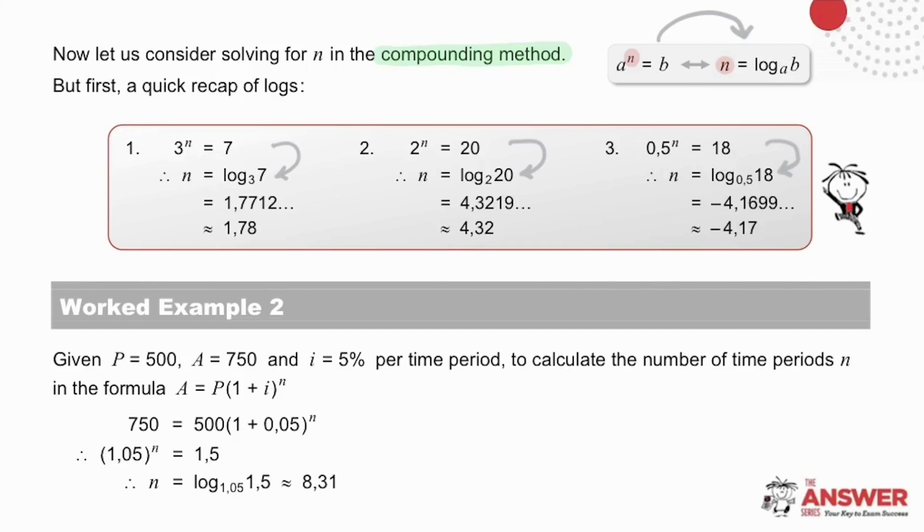This third answer comes out with a negative value for n. It is fully possible for an exponent to be negative, but because here we are calculating the number of time periods, n is not likely to be negative, as we can't work in negative time.